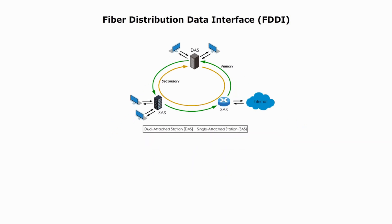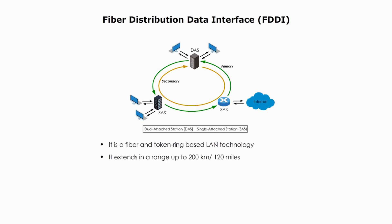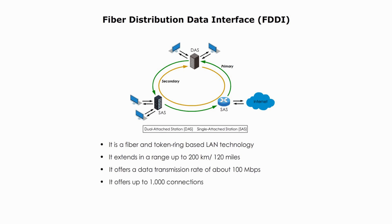Here are some key points about FDDI. FDDI is a fiber-based, token ring LAN topology. It extends in range up to 200 kilometers or 120 miles, offers a data rate of about 100 Mbps, and supports up to 1,000 connections. However, it became obsolete due to its cost, complexity, and the advent of Fast Ethernet.